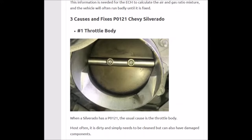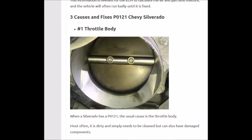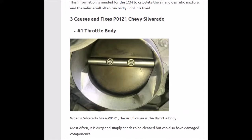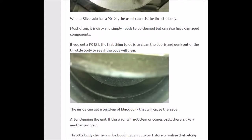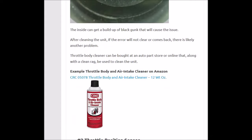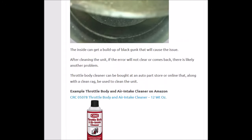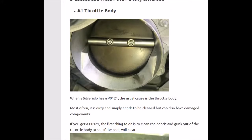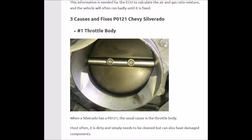It needs this information to send the right gas-air ratio mix into the engine, so it needs to know where the throttle position is at, and since it's not getting that information, it's giving this code. Fix number one is to clean the throttle body. You can get some throttle body cleaner — it's real cheap — from an auto parts store or online on Amazon or eBay. Get a rag and clean it up real good because it gets all dirty and grimy.